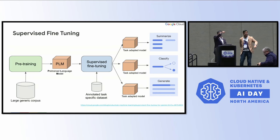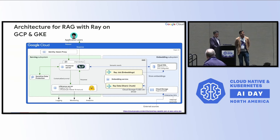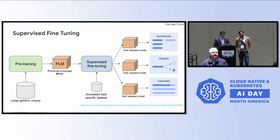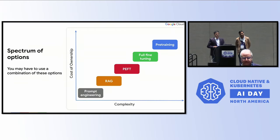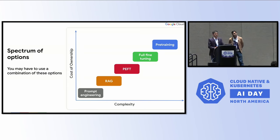One more question: going down the training methodologies from model training to prompt engineering, the quantum of GPUs needed drastically drops. So if you're doing RAG and prompt engineering at the bottom, what is the exact necessity for GPUs there? And if you were to use GPUs and TPUs, how much additional performance are you unlocking? Pre-training and full fine tuning may need them, but for RAG and prompt engineering, why do you need GPUs?